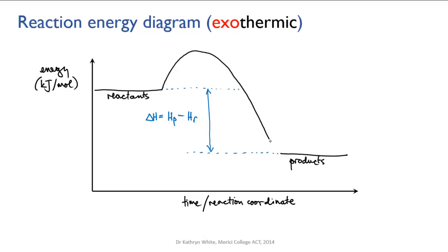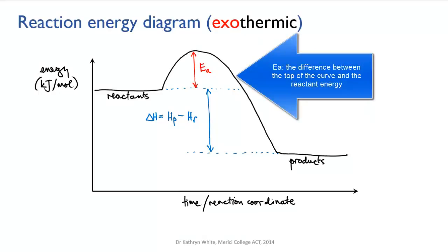The energy then decreases until all the reactants have been transformed into products and we're at the product energy level. If you look at the difference between the reactant energy and the top of the curve, that shows you the value of the activation energy — how much energy had to be put in above the reactant value in order to get the reaction started.